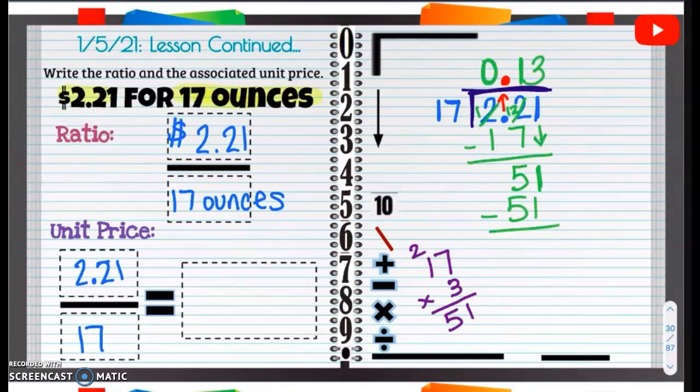17 times 3 gives us 51. When we subtract, we get no remainders. So our answer is going to be 13 cents or 0.13.